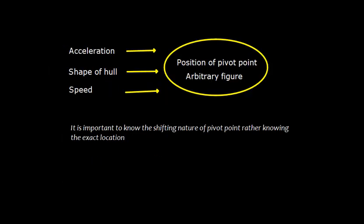Pivot point is an arbitrary figure — an arbitrary number. It depends on the acceleration, shape of hull, and speed of the ship. So it is important to know the shifting nature of pivot point rather than knowing the exact location.